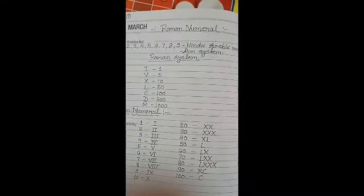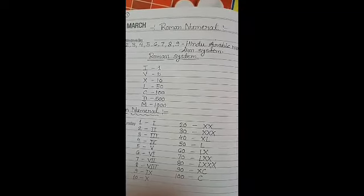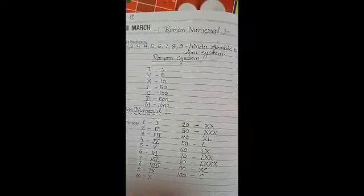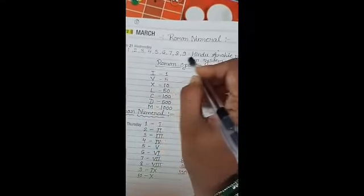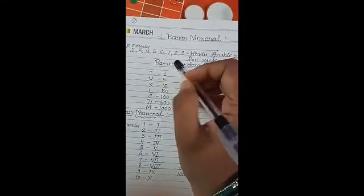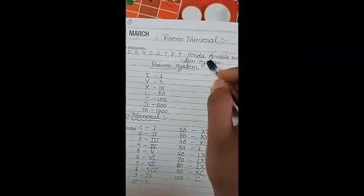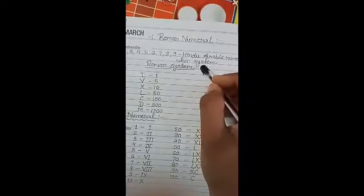To represent any number or to write any number, we use 0, 1, 2, 3, 4, up to 9. This is actually called Hindu-Arabic numeration system.